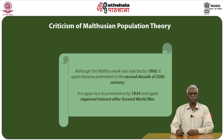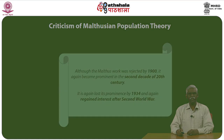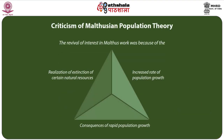There are criticisms that have come up on Malthusian population theory, mainly from various subsequent scholars. Although Malthus's work was rejected by 1900, it again became prominent in the second decade of the 20th century. It lost its prominence by 1934, but regained interest after the Second World War. The revival of interest was due to the increased rate of population growth, the consequences of rapid population growth, and the realization of the limits of certain natural resources.